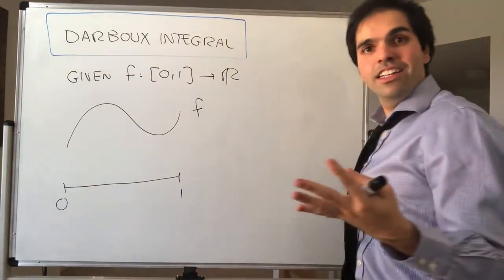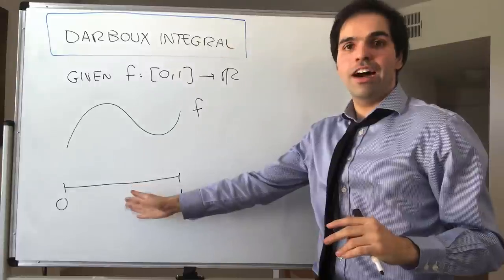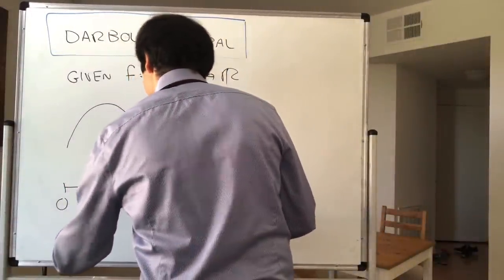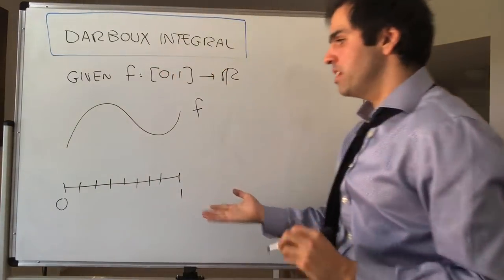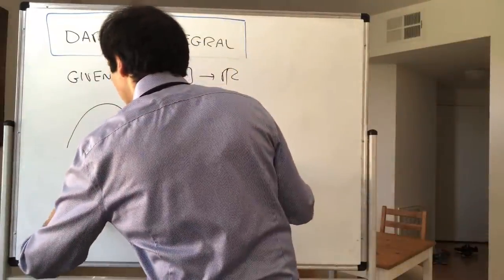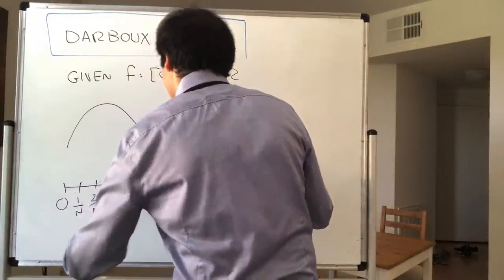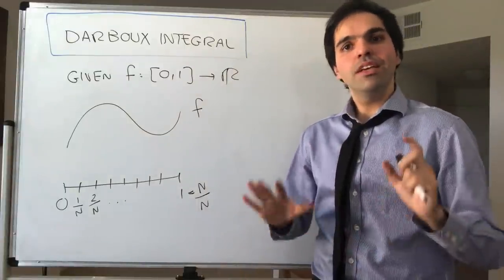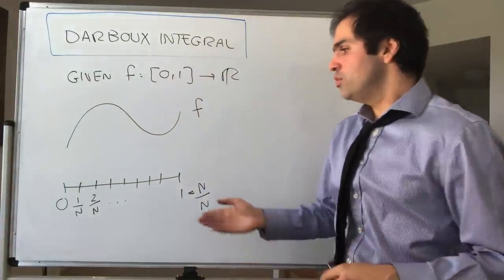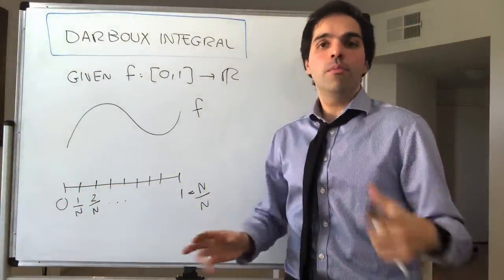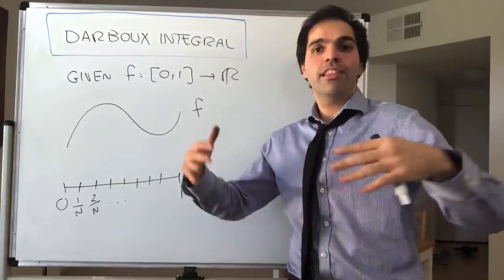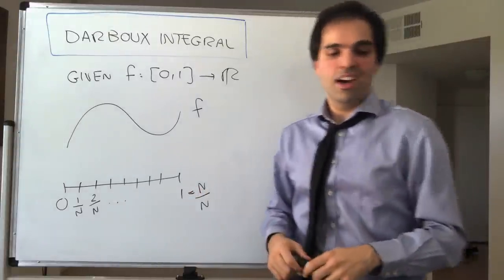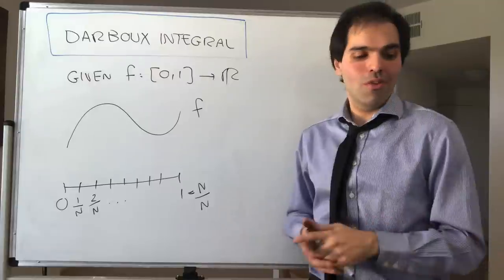Just like for Riemann integrals, you want to subdivide [0,1] into n rectangles of width 1/n. So the first point is 1/n, then 2/n, dot dot dot, up to n/n. By the way, I'm doing a simplification here — technically for Darboux integrals the widths aren't always the same, but you require that the largest width be 1/n. That's what's called a mesh, where the rectangles don't always have the same size.